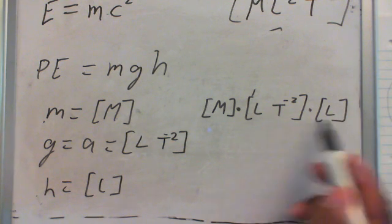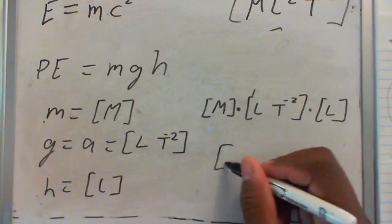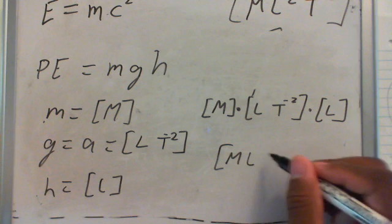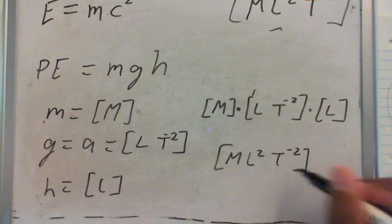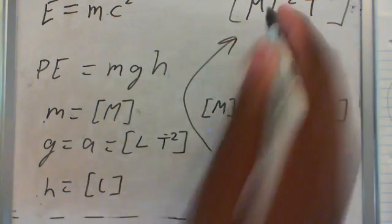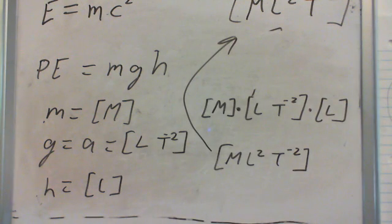And as you can see, when you multiply this together, it equals M times L squared over T squared, which equals what MC squared equals. So E does equal, it does in fact equal MC squared. And Einstein, of course, was correct when he made these equations.